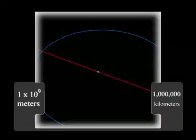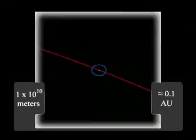Going up by another factor of 10 to 10 to the 10 meters, or a tenth of an astronomical unit, you can see that the Moon's orbit is now pretty small, and you can see part of the arc of Earth's orbit.